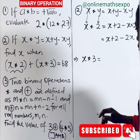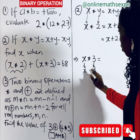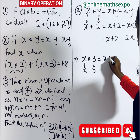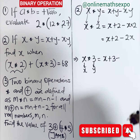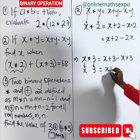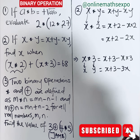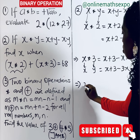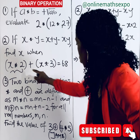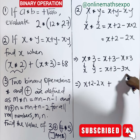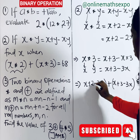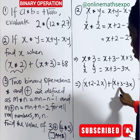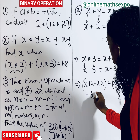Now we combine the two results: (x + 2 − 2x) + (x + 3 − 3x) = 68. Expanding the brackets gives us x + 2 − 2x + x + 3 − 3x = 68. Collecting like terms: x − 2x + x − 3x = −3x, and constants 2 + 3 = 5. So we have −3x + 5 = 68.